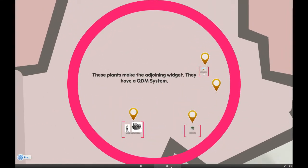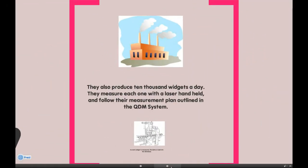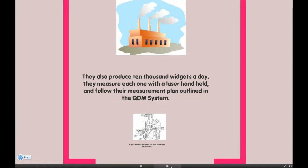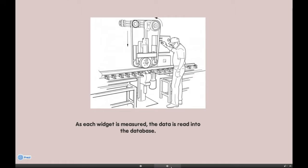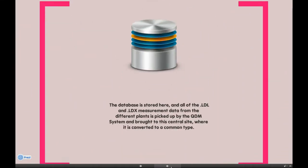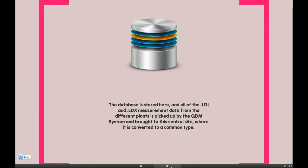Now these plants make the adjoining widget, and they have a QDM system. They also produce 10,000 widgets a day, measure each one with a laser handheld, and follow their measurement plan outlined in the QDM system. As each widget is measured, the data is read into the database. All of the LDL and LDX measurement data from the different plants is picked up by the QDM system and brought to a central site, where it is converted to a common type.